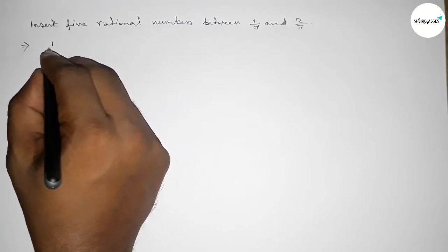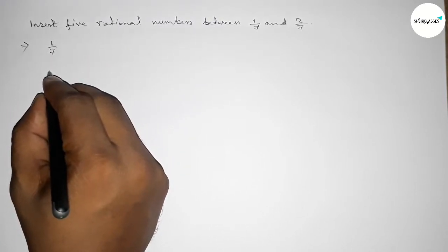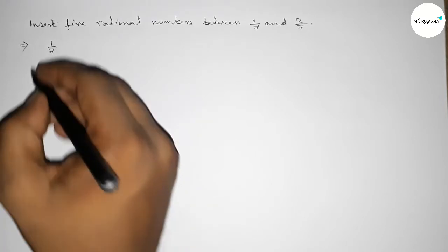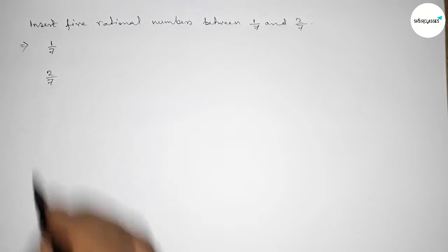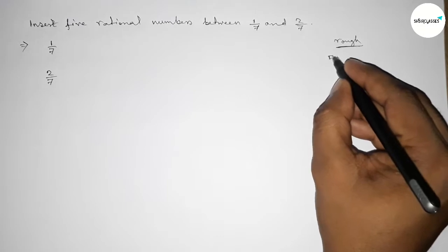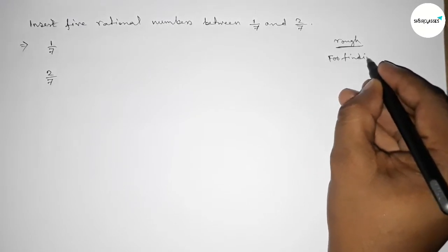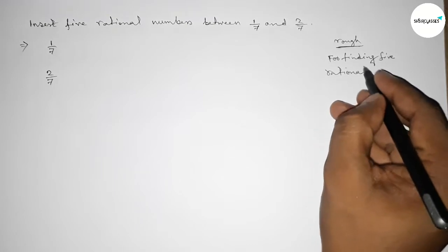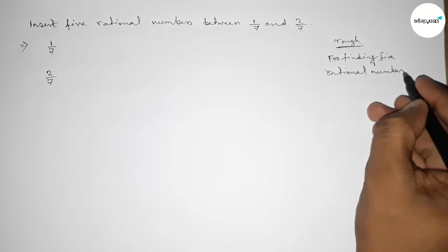Here are the given two numbers: 1/7 and 2/7. The denominator of both numbers are the same. Now let's discuss the calculation for finding five rational numbers between 1/7 and 2/7.